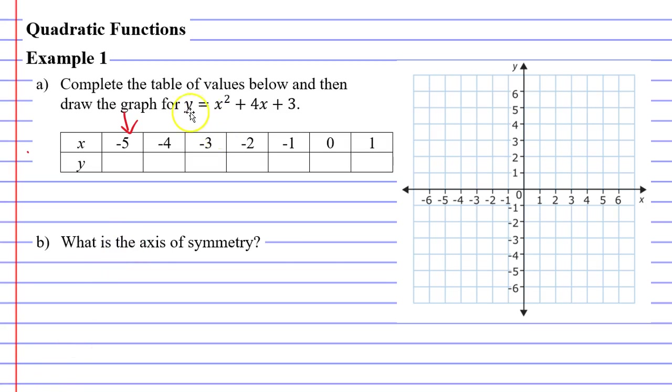So our equation says y equals x squared. If we substitute negative 5 into that we get y equals negative 5 squared. Notice how I put my negative number in brackets. This is really important particularly if you're squaring a number.